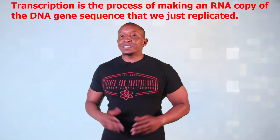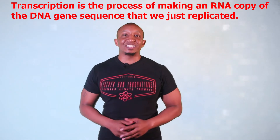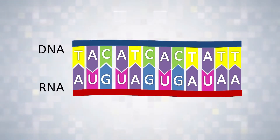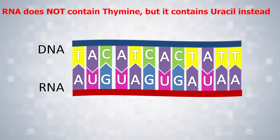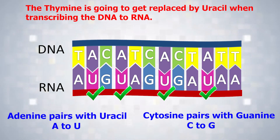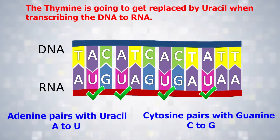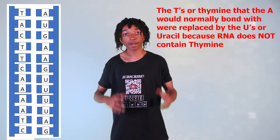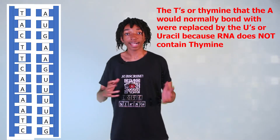Next we move on to transcription, which is the process of making an RNA copy of the DNA gene sequence that we just replicated. During transcription, the message from DNA is transcribed into messenger RNA, also known as mRNA. It's important to know that RNA does not contain thymine, but contains uracil instead. So thymine gets replaced by uracil when transcribing DNA to RNA. Using the top part of our DNA strand — TAC, TTC, AAA, ATC — it will be transcribed into AUG, AAG, UUU, UAG. Notice that the T's or thymine were replaced by U's or uracil because RNA does not contain thymine.